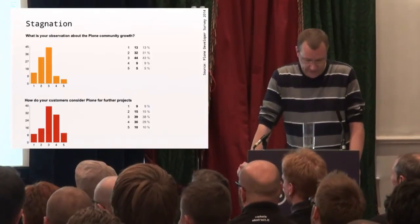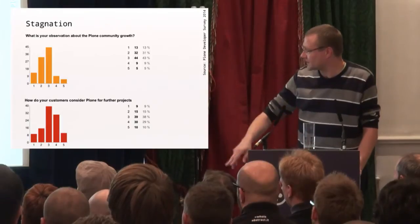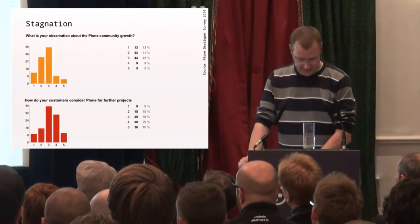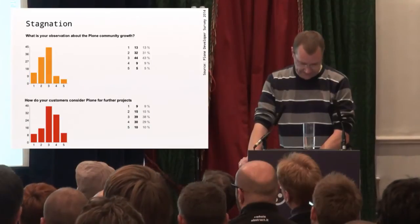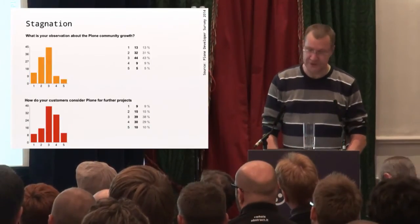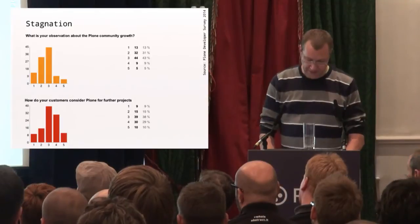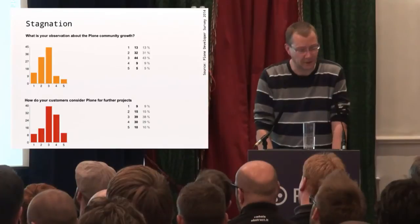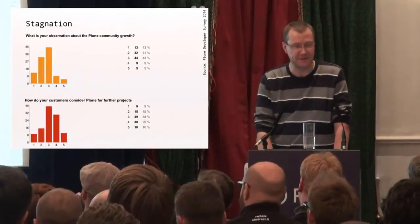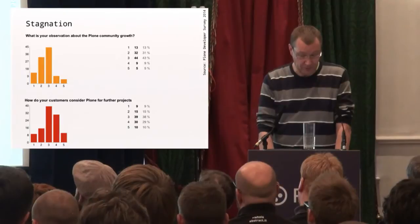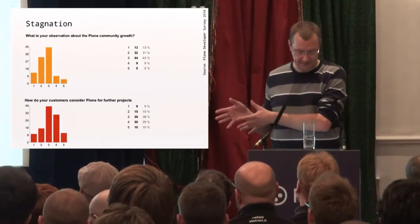One question was about the observation of Plone community growth. In the chart, one means shrinking and five means growing. A big majority — at least 56% — said their impression is that the Plone community is shrinking and not growing. In comparison, when asked how they consider Plone for further projects, they say Plone is important and the amount of projects could possibly grow. So it's basically some imbalance between people doing Plone and expectations from customers with Plone projects.